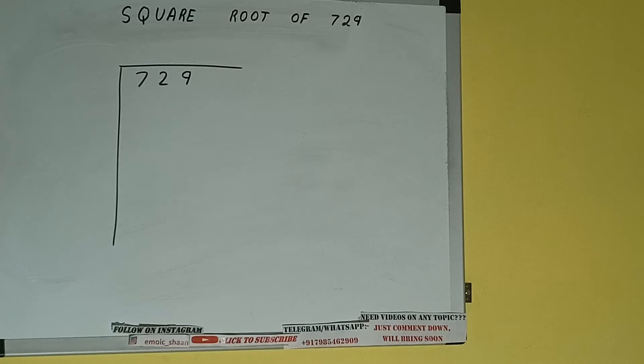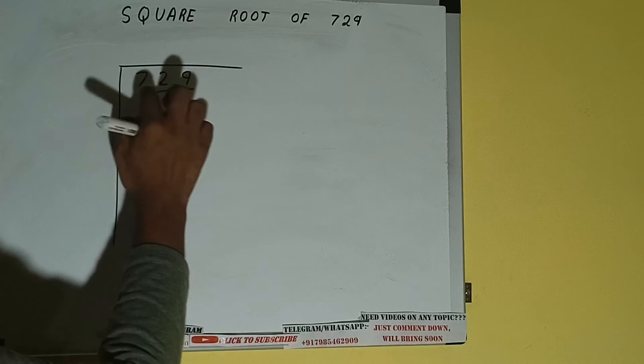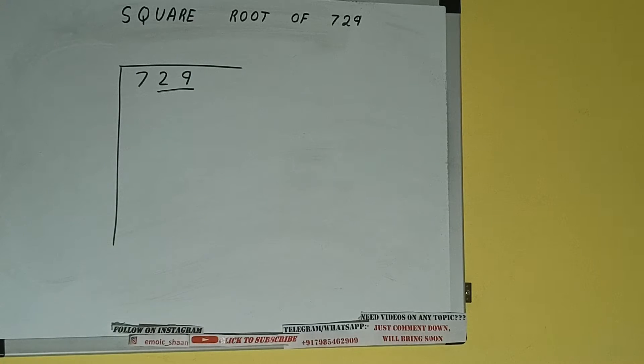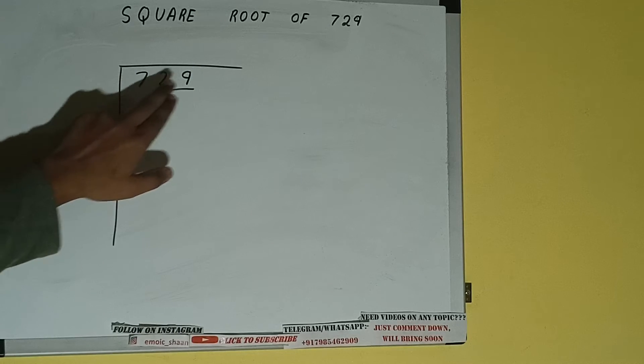The next thing we need to do is form pairs from the right hand side. So one pair will be this, and this 7 will be left out. So first we'll write this 7, and then we'll bring down the pair.